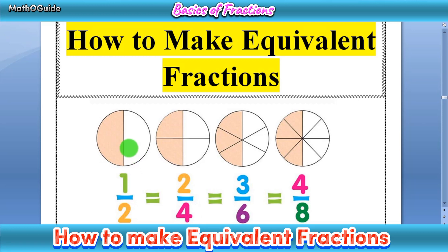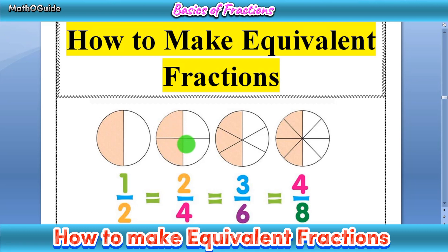We have represented a fraction in circle form. 1 over 2 means we have two parts of a circle and we have filled out one part, so 1 part out of a total of 2 is colored. In the next circle, we have 4 equal parts and 2 parts out of 4 are colored. Then we have 6 total parts with 3 parts out of 6 colored. And in the next we have 8 total parts with 4 parts out of 8 colored.